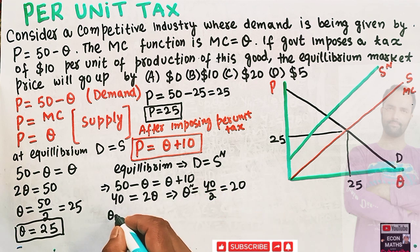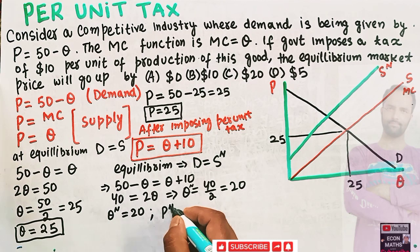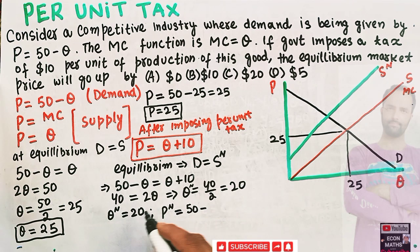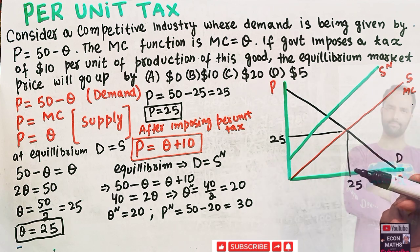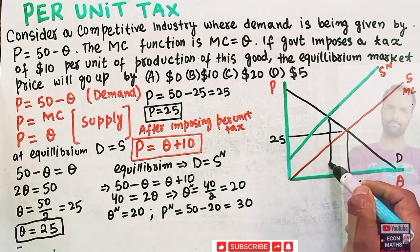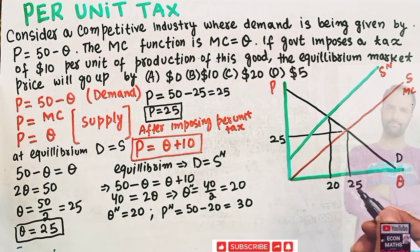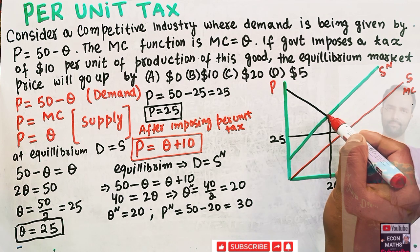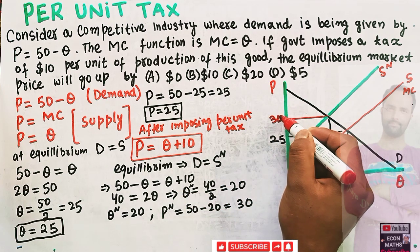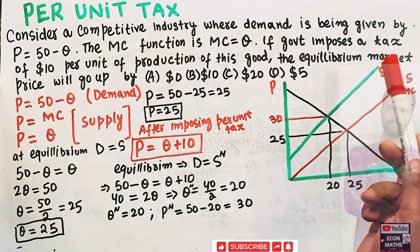The new equilibrium quantity is 20. The corresponding new price is found by plugging Q = 20 into the demand function: P = 50 minus 20 = 30. So the new equilibrium price is 30. When the supply curve shifts upward, the marginal cost of production has increased, so we produce less output — only 20 units — and the market clearing price is 30.